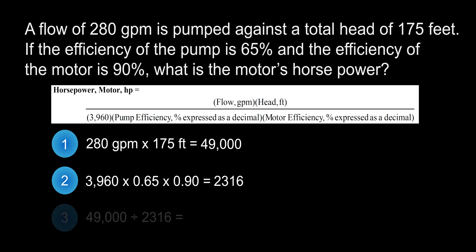Let's put it all together by taking the numerator from the first step, 49,000, and dividing it by our denominator from the second step, 2,316. When rounded, this gives us a final answer of 21 horsepower.